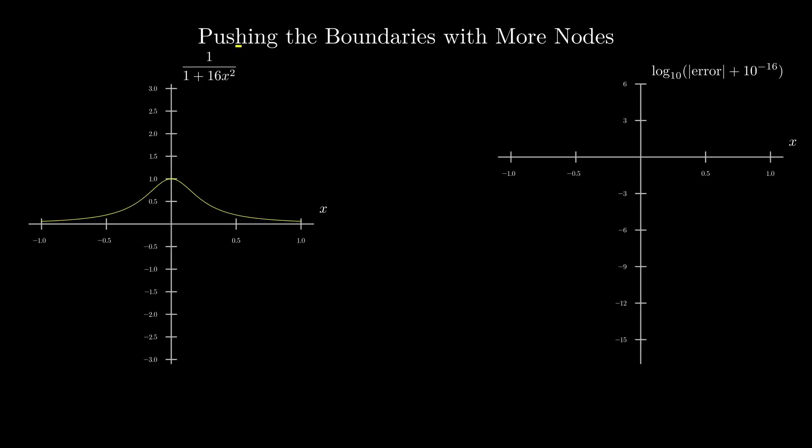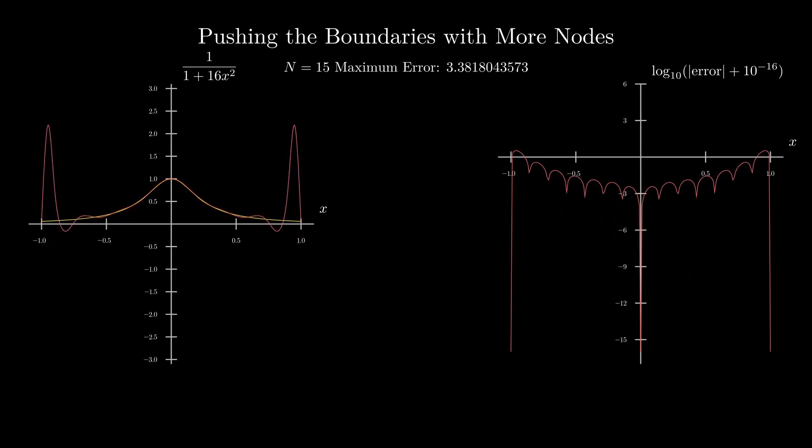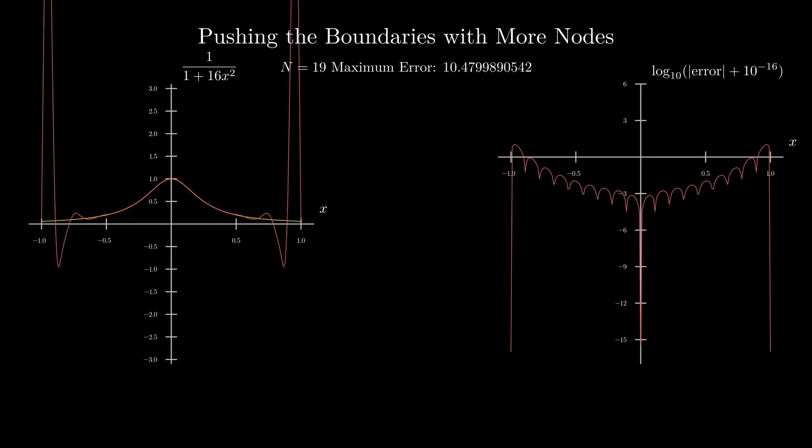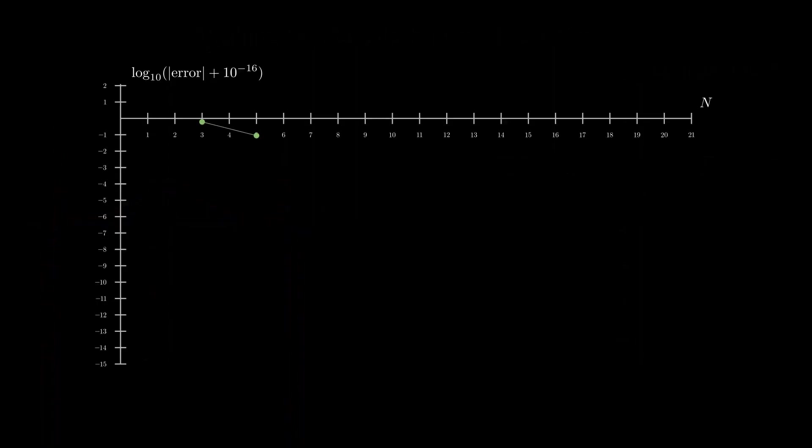Now let's try this again with a different function, the so-called Runge function. Things aren't looking good. The interpolant is fluctuating wildly and the error is actually increasing. Looking at a summary, we see for cosine the convergence is exponential until we reach the precision of the computer. But for the Runge function, the interpolant diverges from the true function. What went wrong?